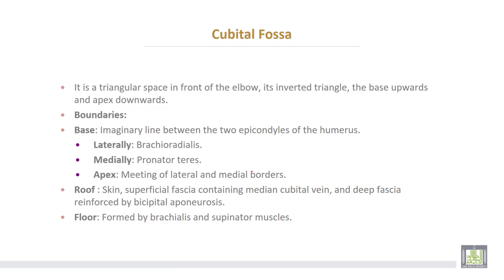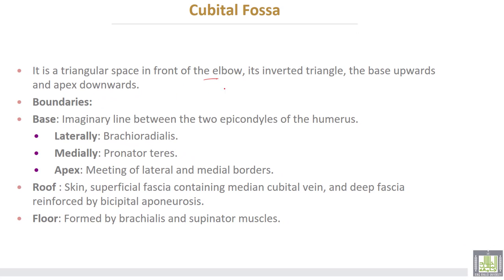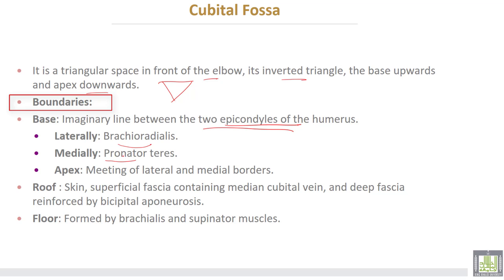The cubital fossa is a triangular space in front of the elbow joint — an inverted triangle with the base upward and the apex downward. Its boundaries: the base is an imaginary line between the two epicondyles of the humerus; laterally, the brachioradialis muscle; medially, the pronator teres. The apex is the meeting point of the lateral and medial borders. The roof consists of skin, superficial fascia containing the medial cubital vein, and deep fascia reinforced by the bicipital aponeurosis.